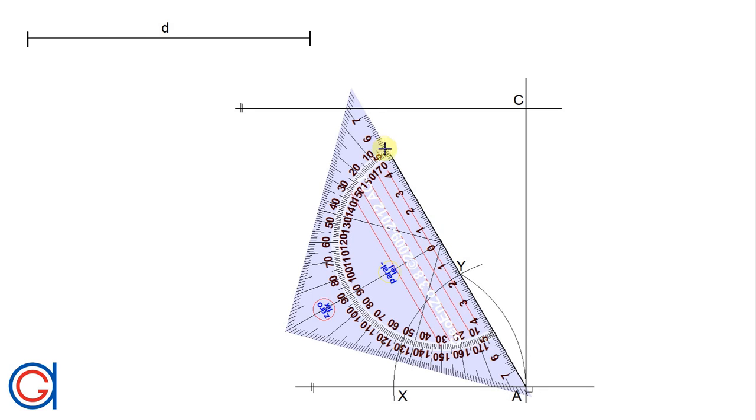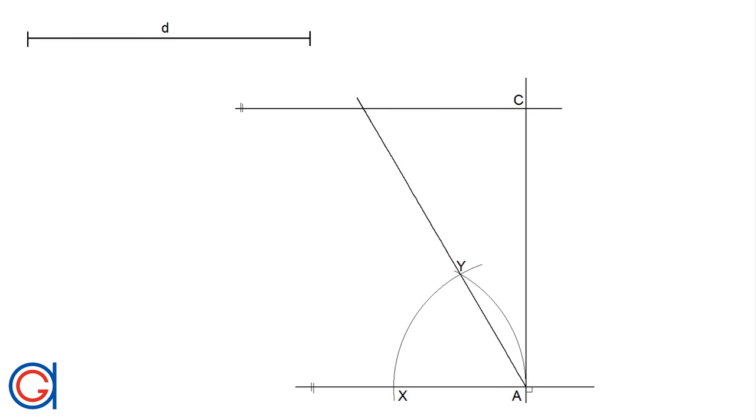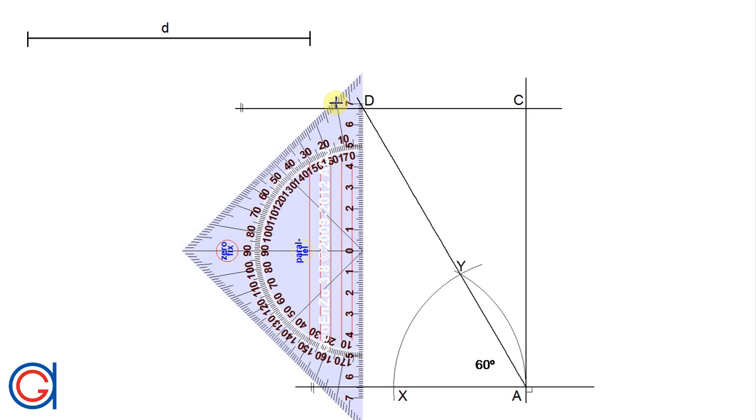Now we draw a line from point A through Y and elongate it until it cuts the top line C, and we get a third vertex of the hexagon, which we will call D.